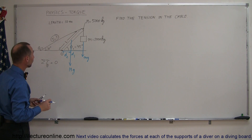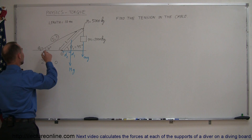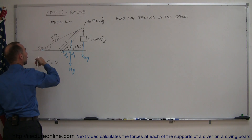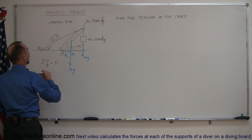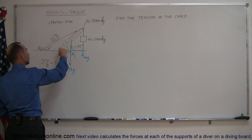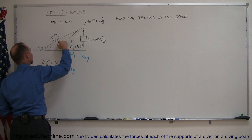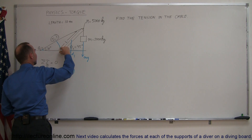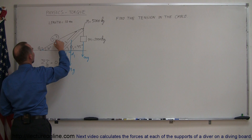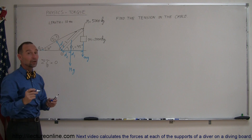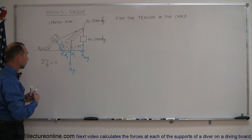The third item is the tension of the cable, pulling in its direction. We need the perpendicular distance from the pivot point to the line of action of that force. Since the tension is in that direction, perpendicular to that is distance d3. So we have d1, d2, and d3 identified, and now we can set up the equation.